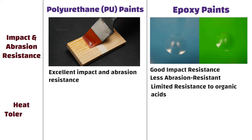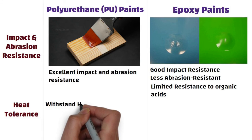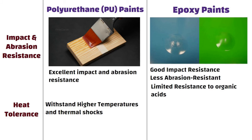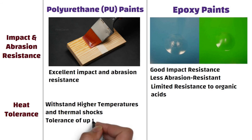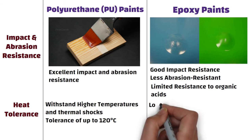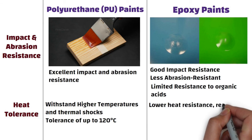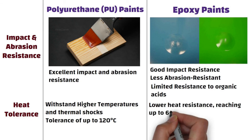Heat tolerance. Polyurethane can withstand higher temperatures and thermal shocks better than epoxy, with a tolerance of up to 120 degrees Celsius. In contrast, epoxy has a lower heat resistance, reaching up to 65 degrees Celsius.